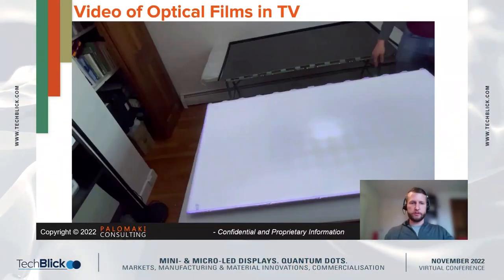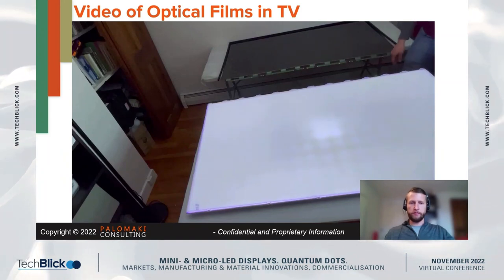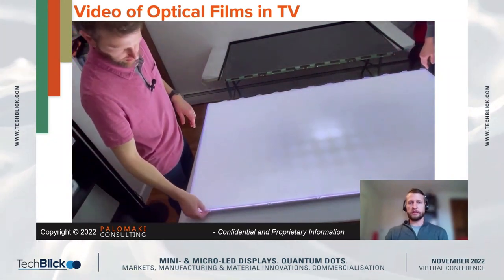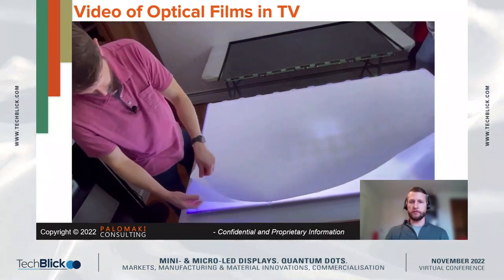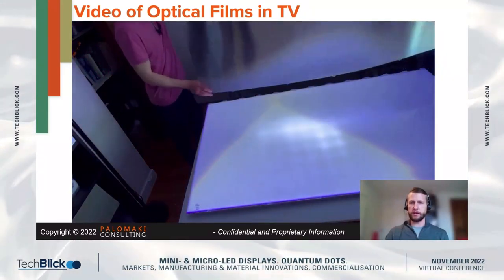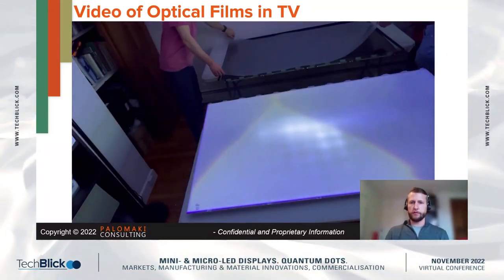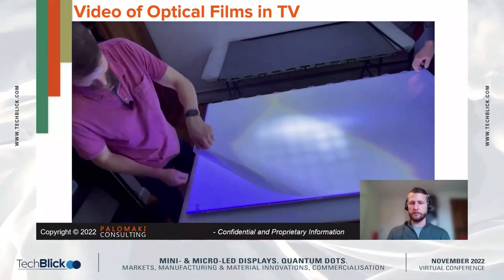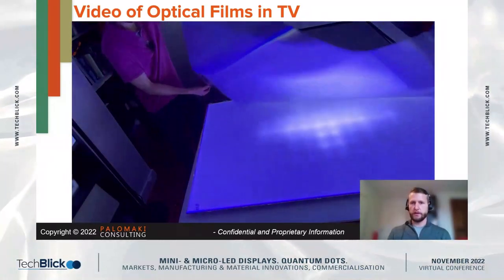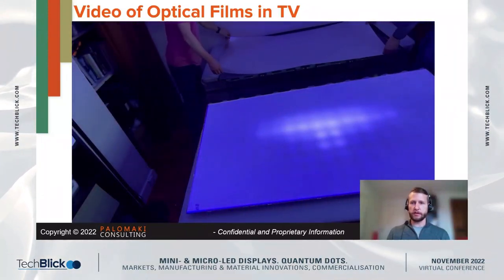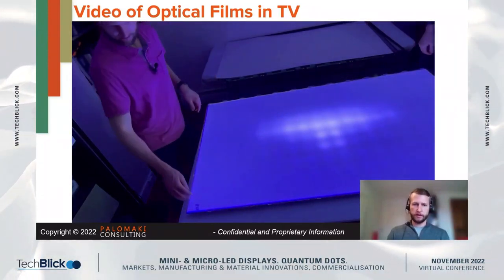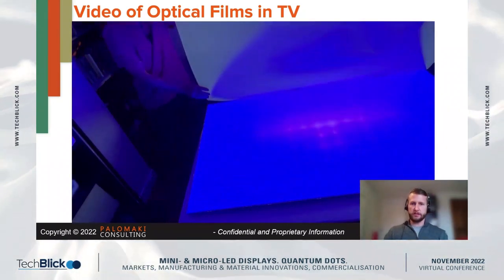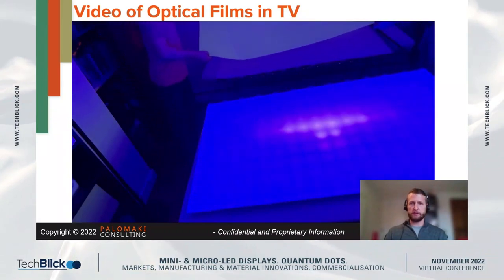I'll jump right in by showing you a video of taking apart the various optical films inside a display. You can see the LCD in the background, already removed from this 55 or 65 inch display. Then we remove a few other optical films — polarizing films and light recycling films, often called BEFs or DEBEFs. As we remove more and more of them, we get more blue light coming out. The next layer is actually the quantum dot film — a very flexible plastic sheet.